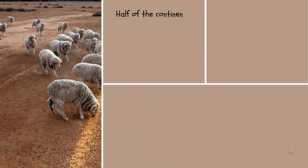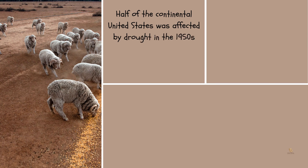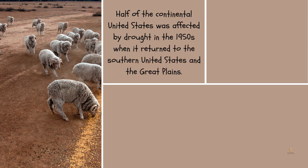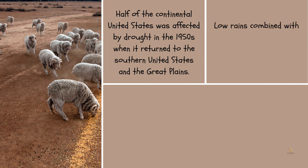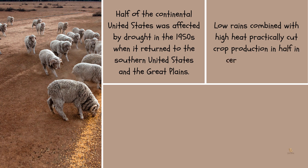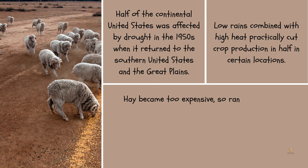Half of the continental United States was affected by drought in the 1950s when it returned to the southern United States and the Great Plains. Low rains combined with high heat practically cut crop production in half in certain locations. Hay became too expensive, so ranchers were compelled to feed their animals molasses and prickly pear cactus.